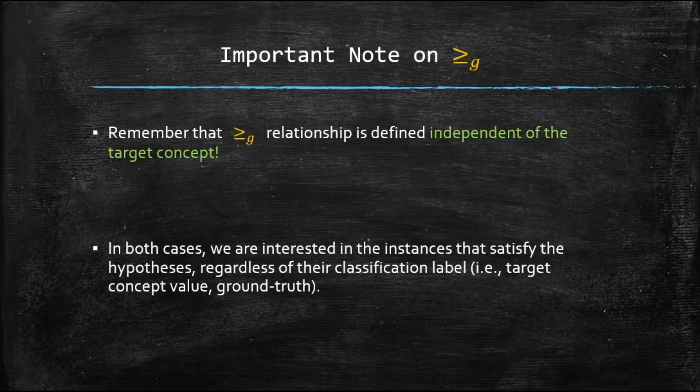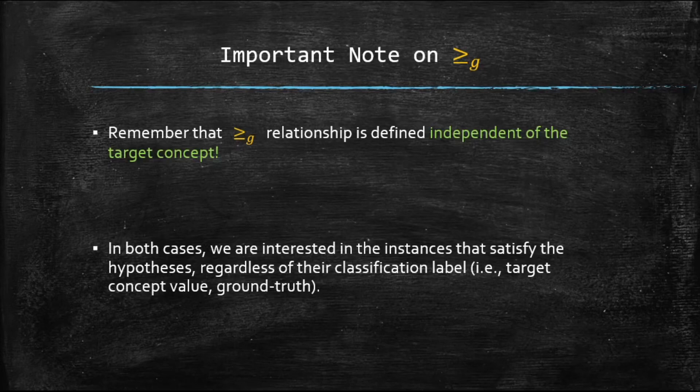Last important note, number one. This relationship of more general than or equal to is defined independent of the target concept, independent of your ground truth and your training examples. It has nothing to do with that. We will focus on this and we will explain to you why we don't care about that bit. In both cases of more general than or more general than or equal to operations, we are interested in the instances that satisfy the hypotheses regardless of their classification label. Don't forget that because this is really important. We don't care about the target concept value, also known as the ground truth.